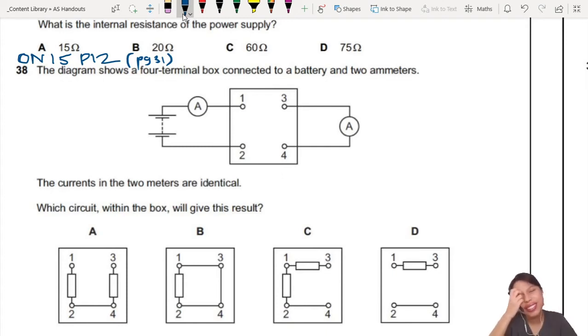This one doesn't really fit into any topic. It's kind of just you have to think about current as a whole, common sense kind of thing. So here you have a four-terminal box, like in your house, a box with wires inside, connected to a battery and two ammeters - ammeter one and ammeter two.